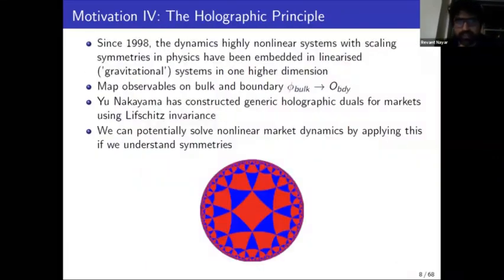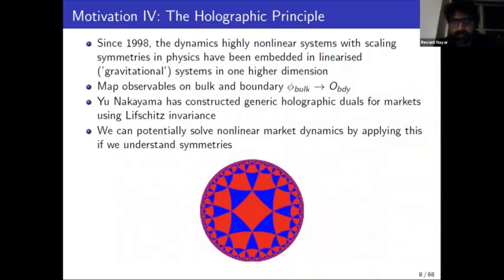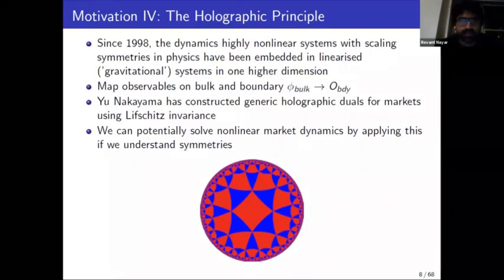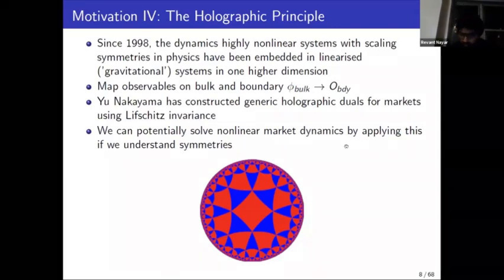The final motivation, and perhaps the most useful today, is that since 1998 in quantum theory, the dynamics of non-linear or strongly coupled quantum systems has been described by linearized gravitational systems in one higher dimension — where 'gravitational' is a purely mathematical term meaning geometric. You can map observables from the bulk to the boundary and do the simpler calculation in the bulk. Nakayama constructed holographic duals for financial markets using Lifshitz invariance.